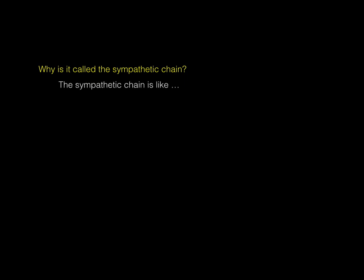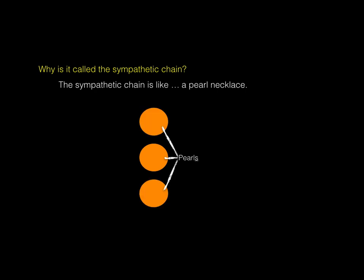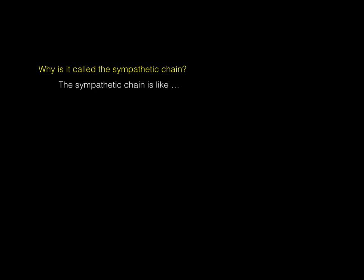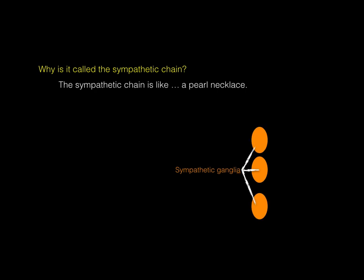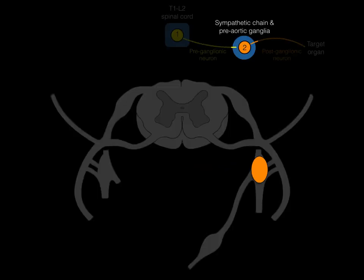Why is it called a sympathetic chain? The sympathetic chain is like a pearl necklace — you have one pearl, then multiple pearls connected by a chain. Similarly, there is one sympathetic ganglion, then multiple sympathetic ganglia, and when you connect them all together you have the sympathetic chain, which is what we see in this picture.